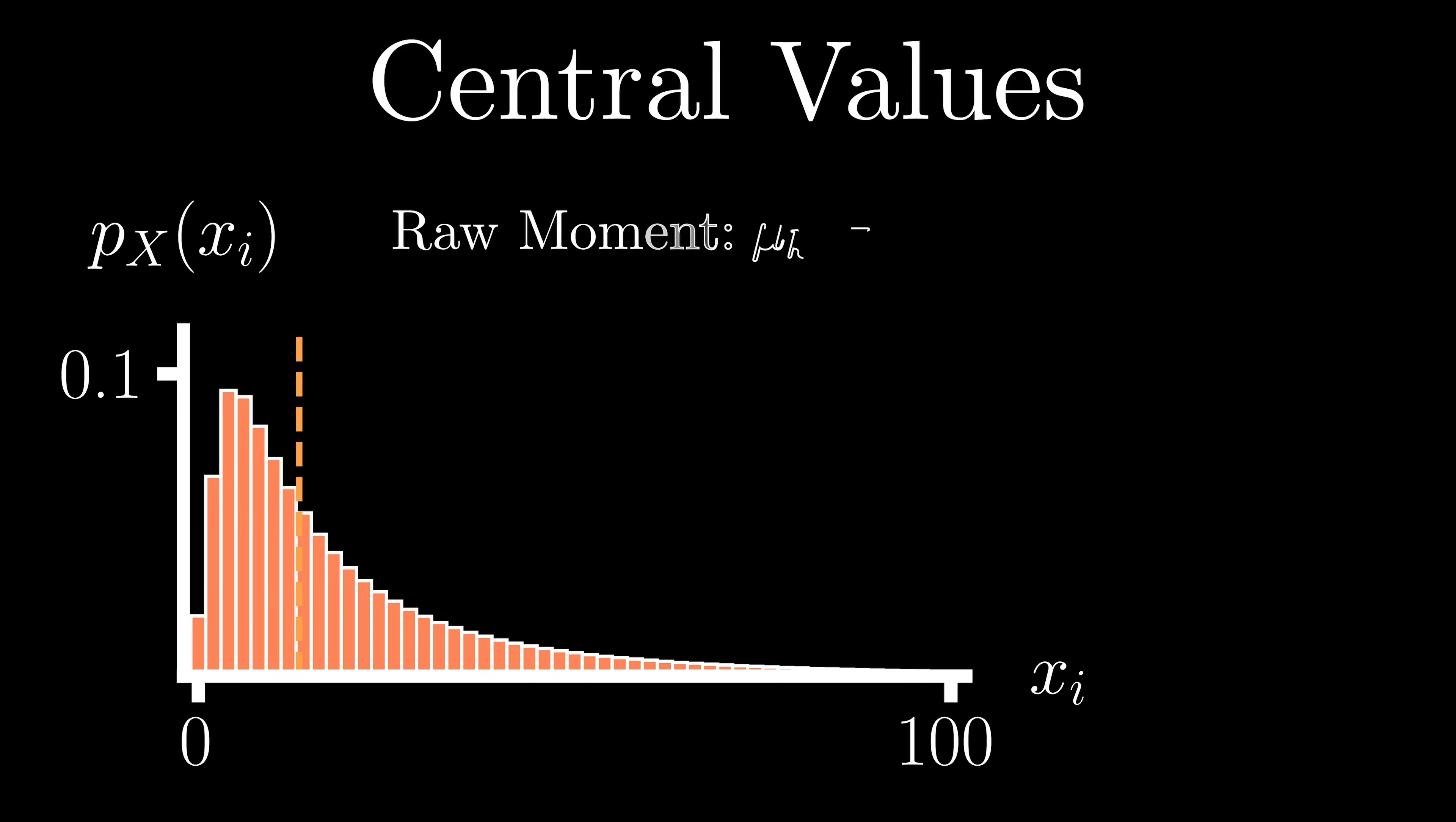Now the kth raw moment for a random variable, mu sub k, which we also call the expected value of X raised to the k, is a weighted average of each possible outcome that X can take on, raised to the k, weighted according to its probability of occurrence.